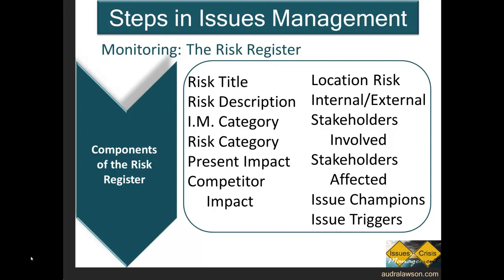Then it starts to get more specific. Ninth, stakeholders involved: in the risk register, identify the stakeholders who are likely to be directly involved in the issue — either causing it or immediately affected by it. This is one reason why it's a good idea to do the stakeholder mapping exercise we discussed; if you already know who your stakeholders are and their relationship with the organization, this part becomes a lot easier.